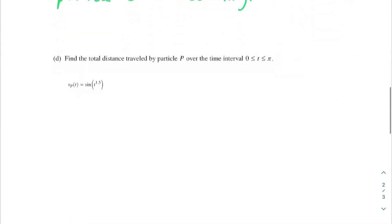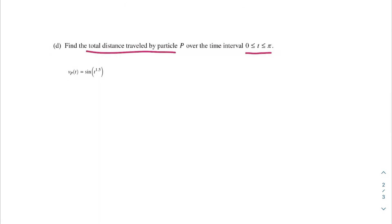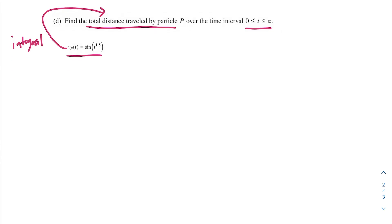Moving on to the last problem, we're being asked to find the total distance traveled by particle P over the time interval that t is between 0 and pi. I've included our velocity again. How do we get from velocity to distance? We take the integral. One thing I'd like to point out here is you might be tempted to just write the integral from 0 to pi of sine of t to the 1.5 power dt and then solve for that. This would actually be incorrect.